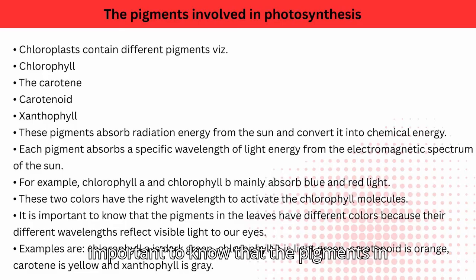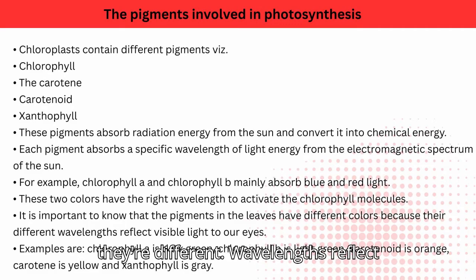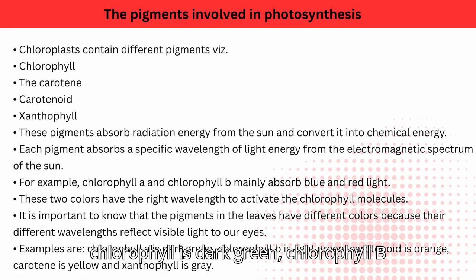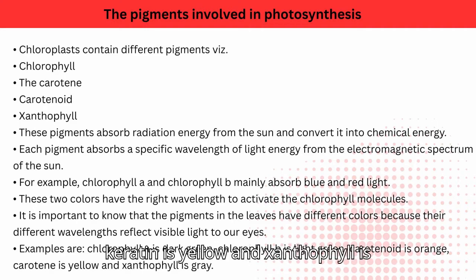It is important to know that the pigments in the leaves have different colors because they reflect different wavelengths of visible light to our eyes. Examples: chlorophyll A is dark green, chlorophyll B is light green, carotenoid is orange, carotene is yellow, and xanthophyll is gray.